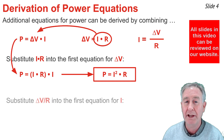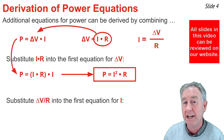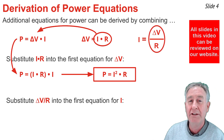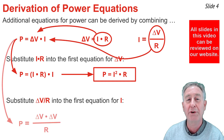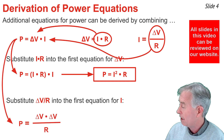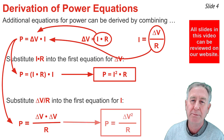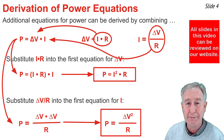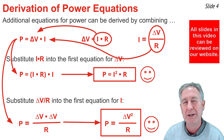In my second derivation, I notice that delta V divided by R equals I. So I'm going to take delta V divided by R and substitute it into the first equation for I. That first equation becomes P equal delta V times delta V over R, which simplifies to P equal delta V squared divided by R. I now have two more equations for electric power, giving me three equations in total. Let's learn how to use them.